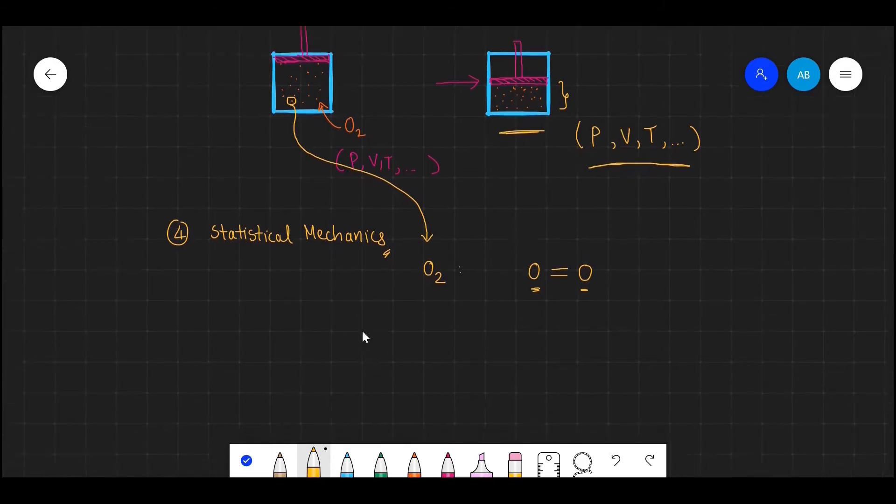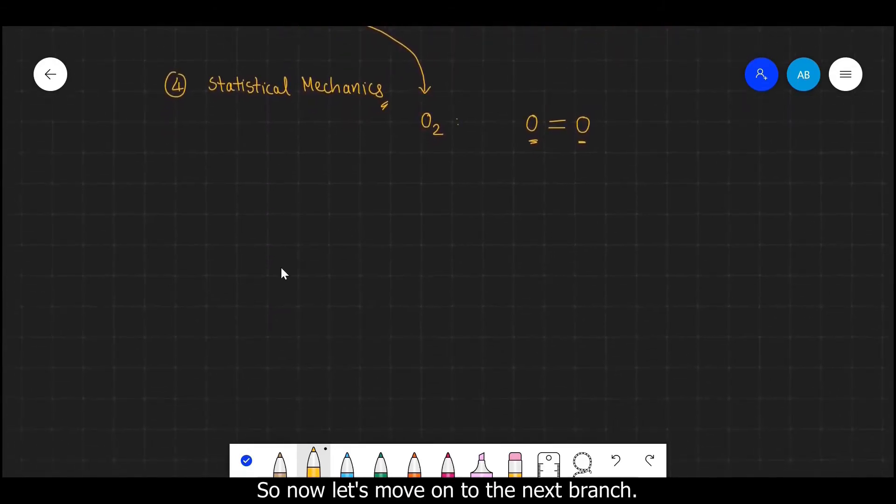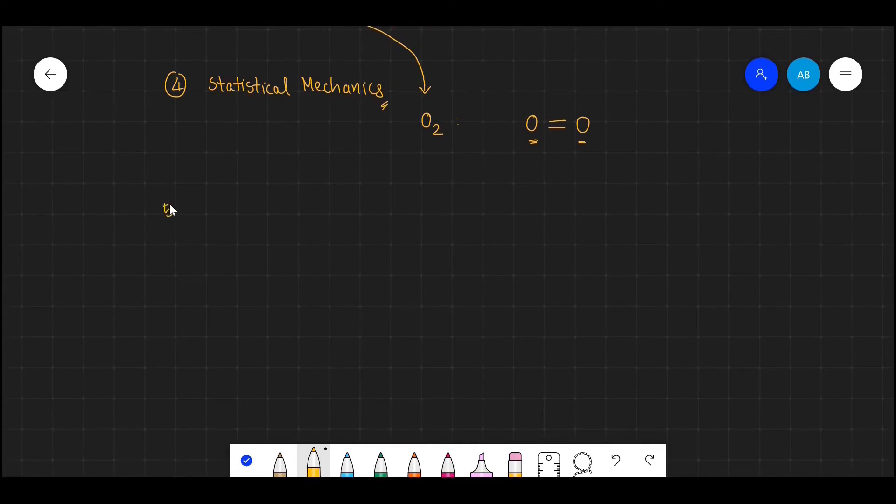Again this branch was developed by many scientists, but the one name that remains on top is Ludwig Boltzmann. Good. So now let's move on to the next branch, which is electrodynamics.